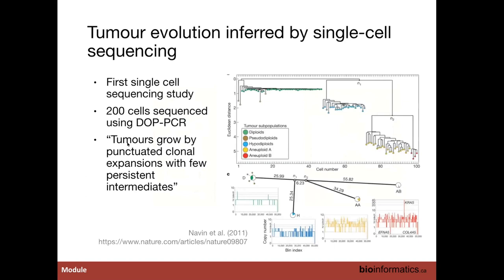One of the first studies was published in 2011 by Nick Navin, now a pioneer in single cell genomics. They used DOP-PCR to sequence 200 cells — the first big single cell sequencing study. When they reconstructed a phylogenetic tree from the inferred copy number for each cell, they described what they saw as punctuated clonal expansion with few persistent intermediates.